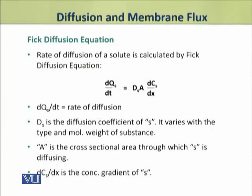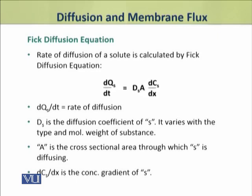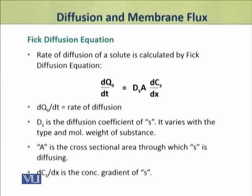The rate of diffusion of a solute is calculated by the Fick diffusion equation. This equation defines that the rate of diffusion — that is, ΔQs/ΔT — depends on the concentration gradient of the substance, represented by ΔCs/ΔX. The rate of diffusion also depends on the diffusion coefficient of the substance Ds, which varies with the type and molecular weight of the substance, and it also depends on the cross-sectional area A through which the substance moves through the membrane.